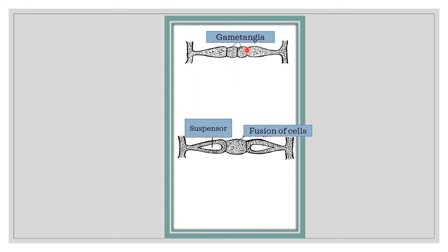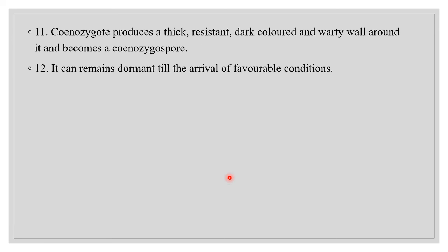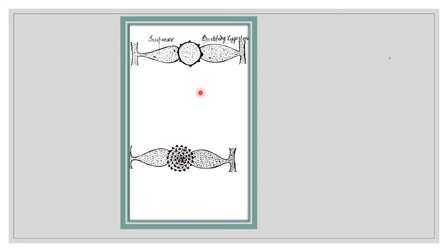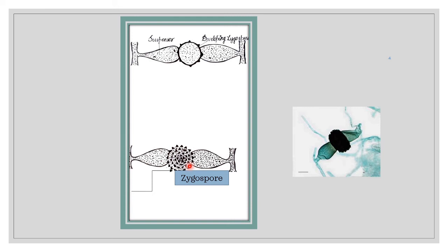The two xenogametes or xenogametangia undergo fusion, forming a xenozygote — a multinucleate zygote that contains numerous diploid nuclei. Nuclei from opposite strains (plus and minus) fuse in pairs. This xenozygote then secretes a thick, resistant, dark-colored wall around itself, becoming the xenozygospore. This spore can survive adverse climatic conditions and remains dormant until favorable conditions arrive.